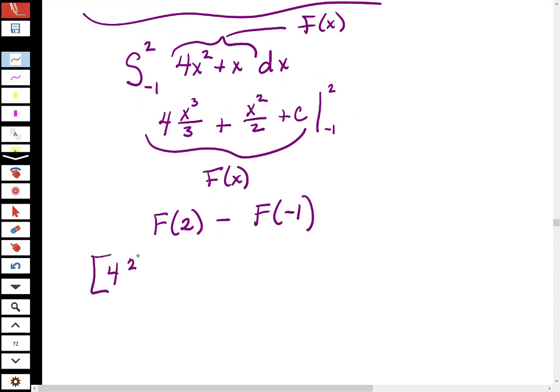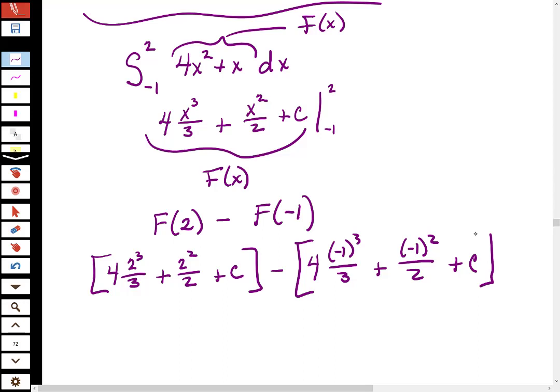4 times 2 cubed over 3 plus 2 squared over 2 plus c. That's f of 2 minus, and then the negative 1. 4 times negative 1 cubed over 3 plus negative 1 squared over 2 plus c. Good.